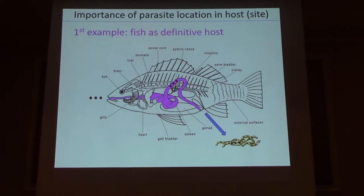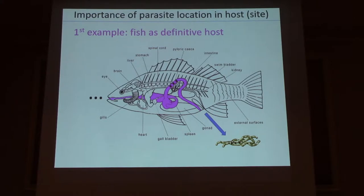When you do parasitology on fish, you need to consider what role the fish is playing in the parasite's life cycle. If you find parasitic worms in the digestive system — in the stomach, pyloric cecae, or intestine — and those worms are gravid with eggs, you can infer that parasite will be transmitted out via the host's feces, moving back down the food web into the benthos.